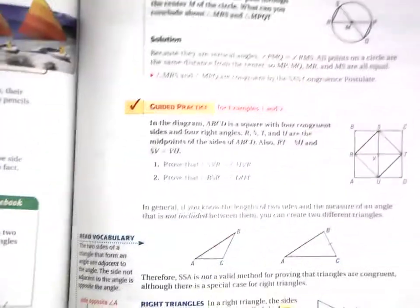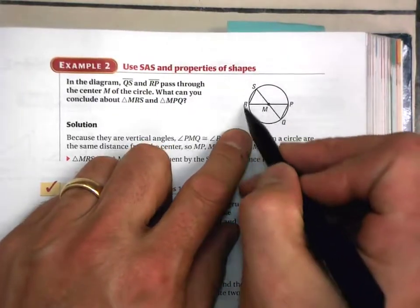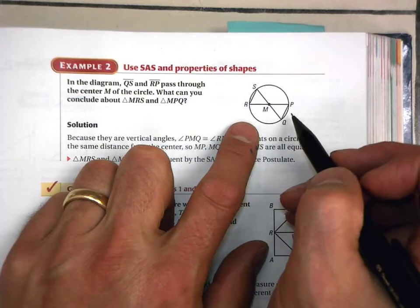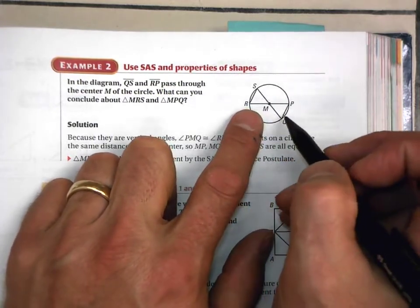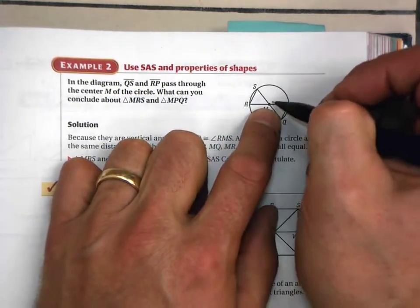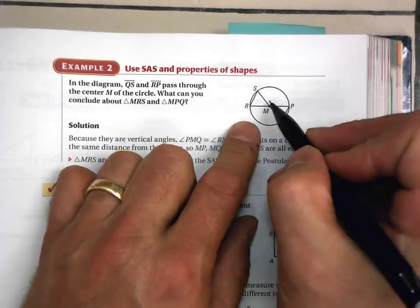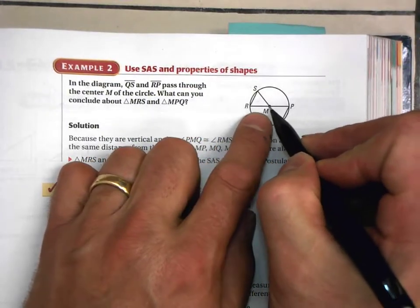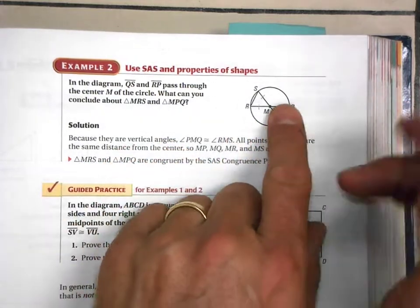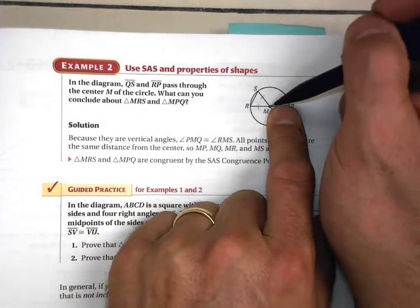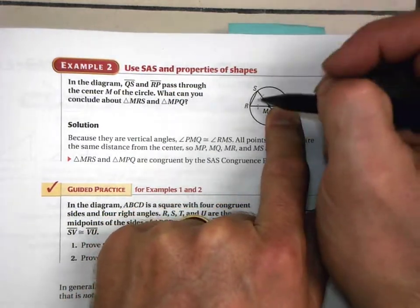Let's look at example two. Here is a circle — this is the center. Going from the center to the circle, what is that called? It's called the radius. This is also a radius, and this is also a radius, so all of these are congruent to each other. In fact, what kind of triangle has two sides congruent to each other? That's an isosceles triangle.